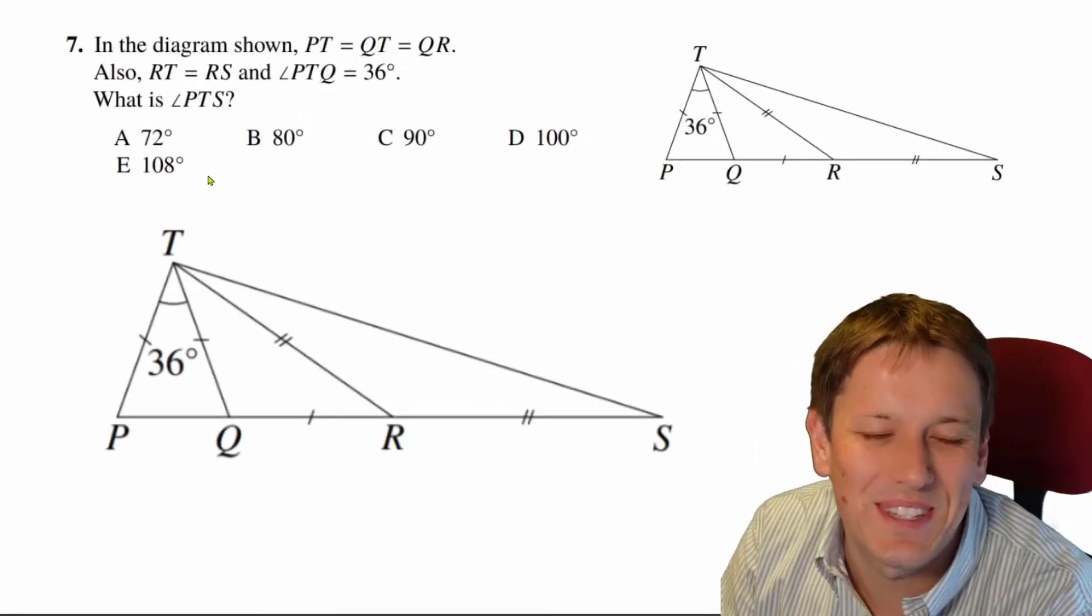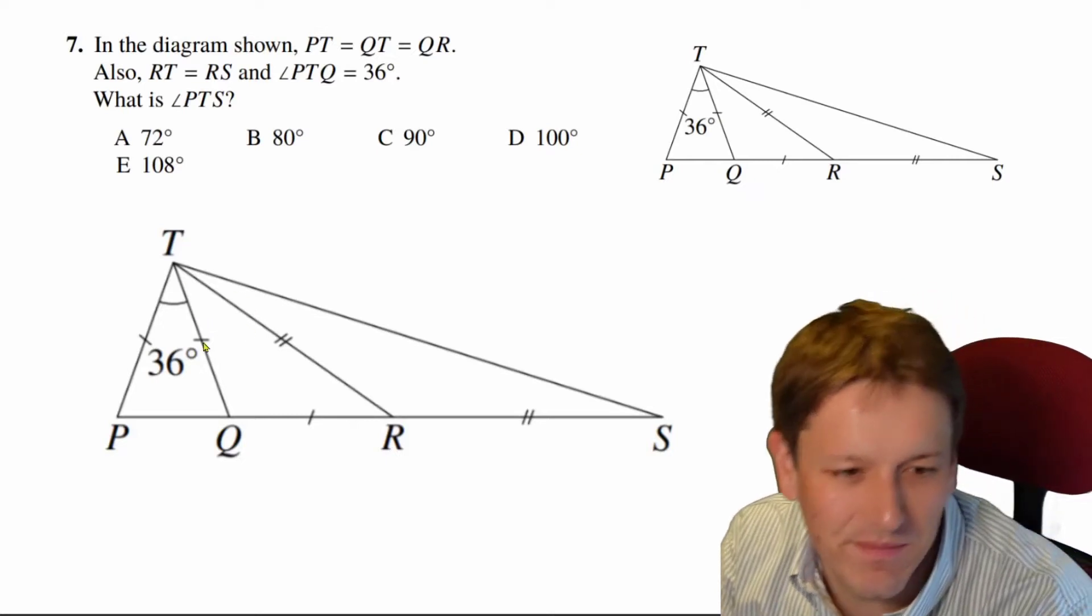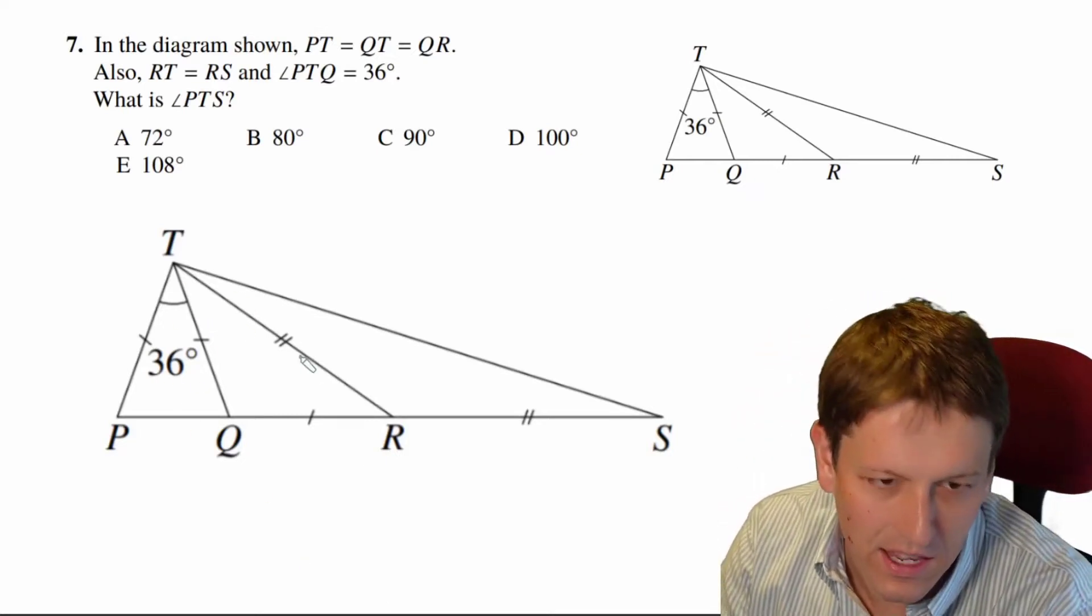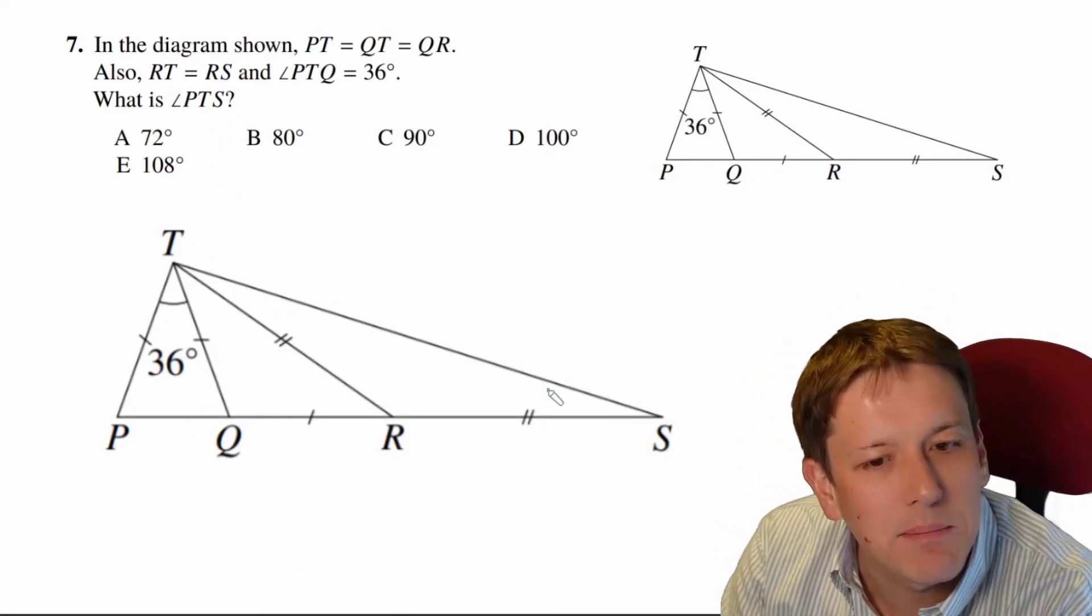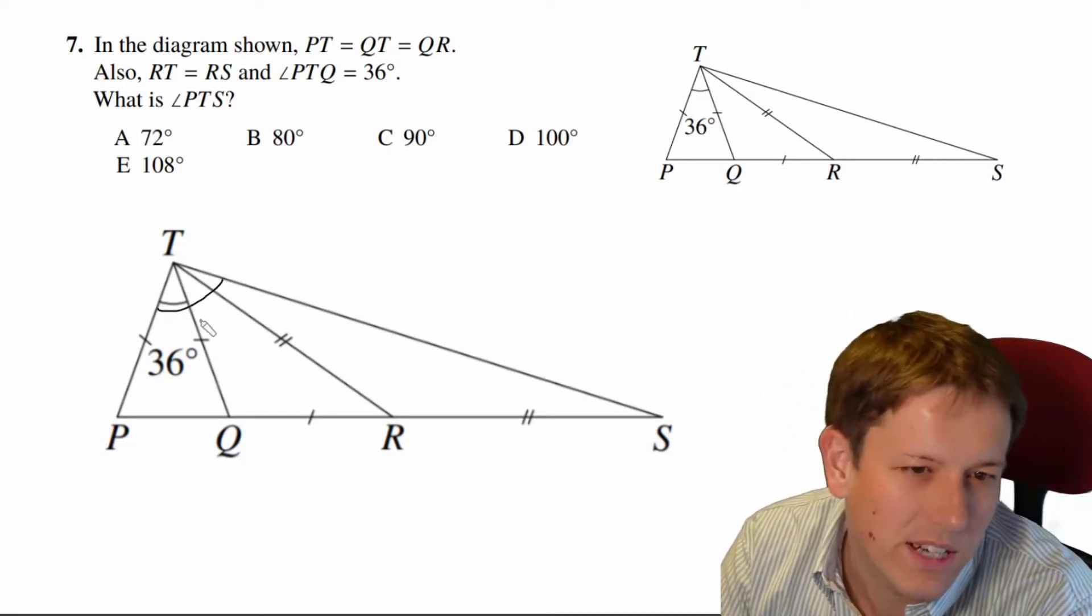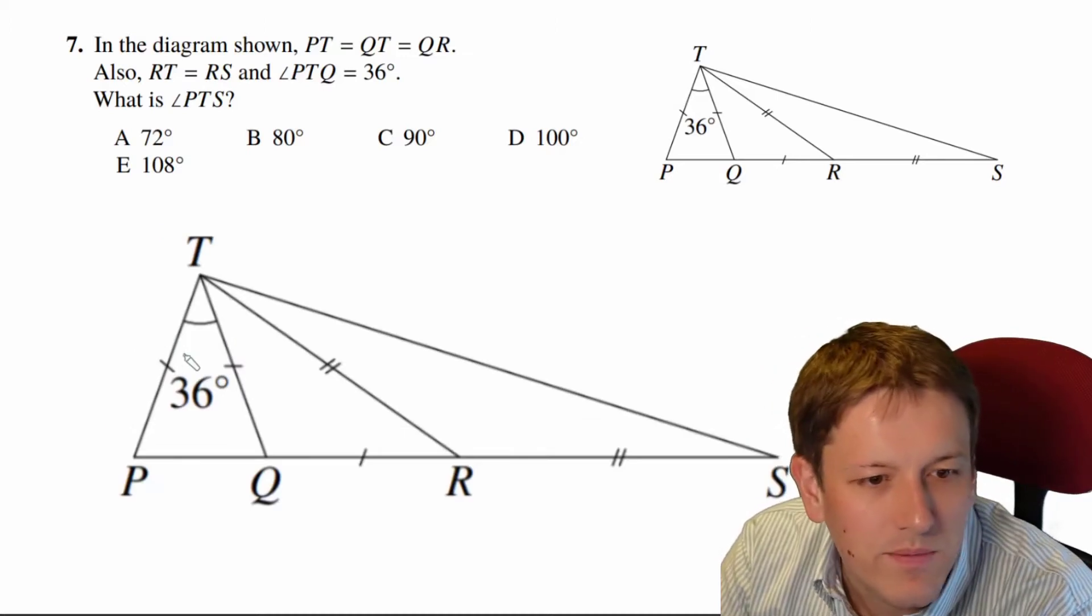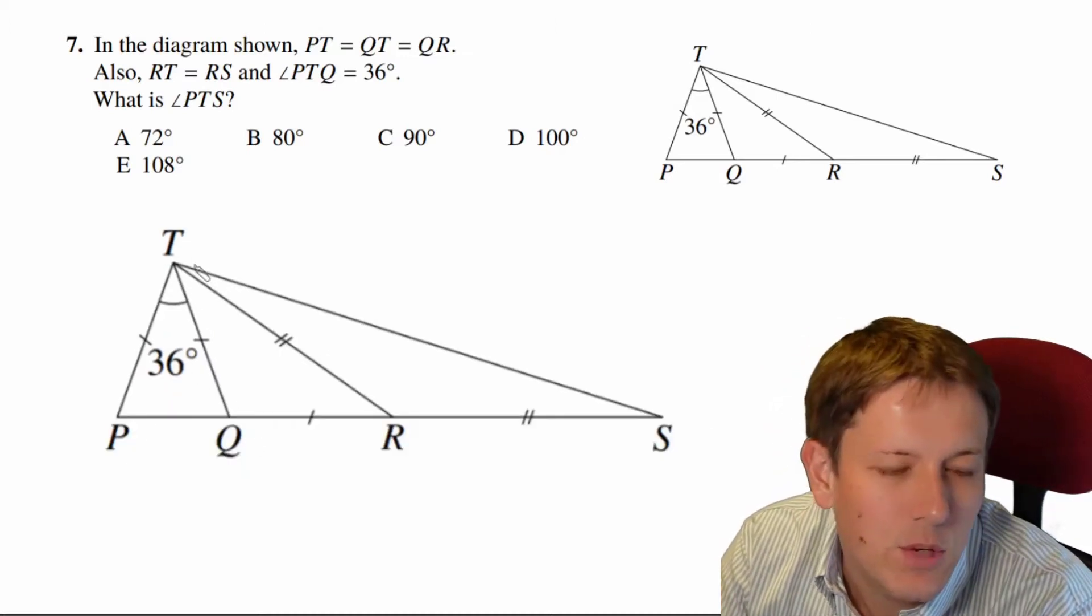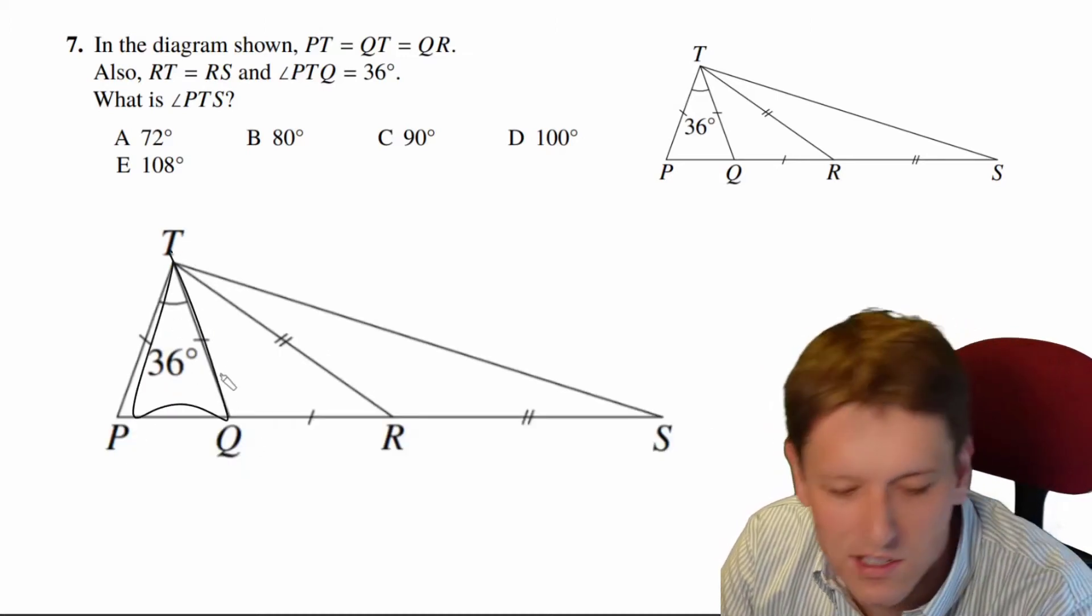Right, so a big copy of the diagram always helps here. Made a slightly larger version so I can put the angles I'm working out in. Remember we want to get angle PTS, so we want to get these triangles combined here, and we've got lots of isosceles triangles. We know that TP and TQ are equal, so TPQ here is isosceles.